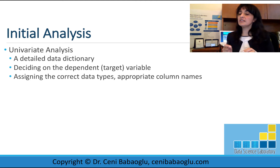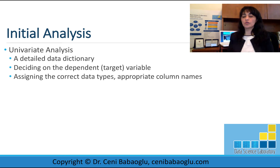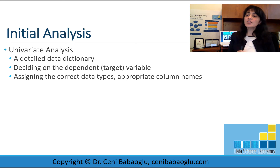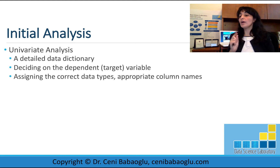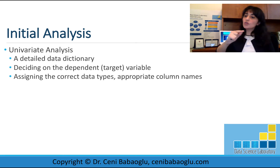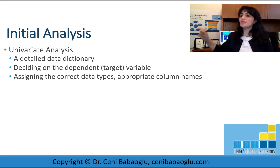Checking the levels and frequency tables of categorical variables should also be done at this step. We can also check the names of the columns and put suitable column names for the variables. Each column will represent one variable — one attribute, such as age, height, or weight — and each different observation should go to a different row.